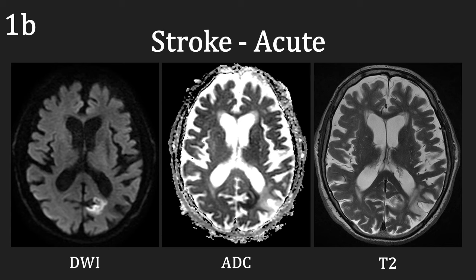Here is another example of an acute infarct or stroke. This is a 92-year-old male patient who presented with sudden onset right-sided blurred vision. We can see in his left occipital lobe that there is an area of high signal on the DWI, low signal on the ADC, and high signal on the T2. This represents an acute infarct.